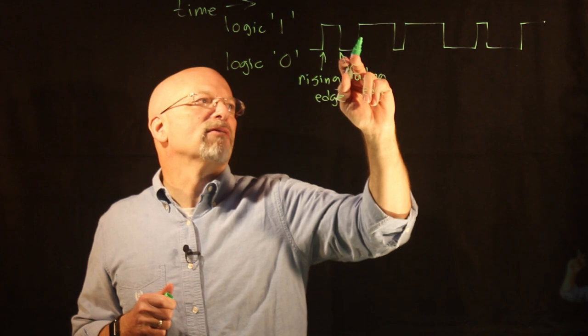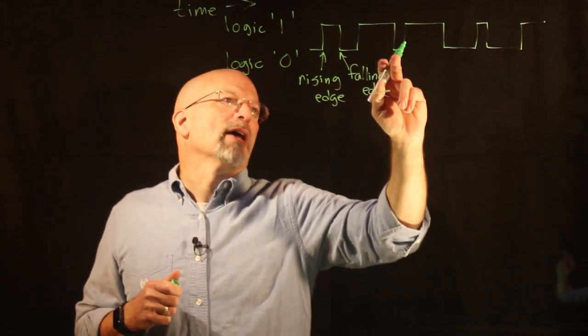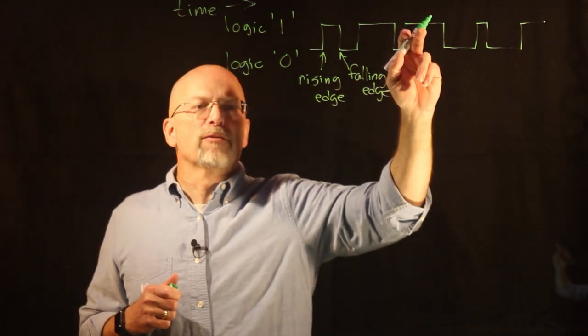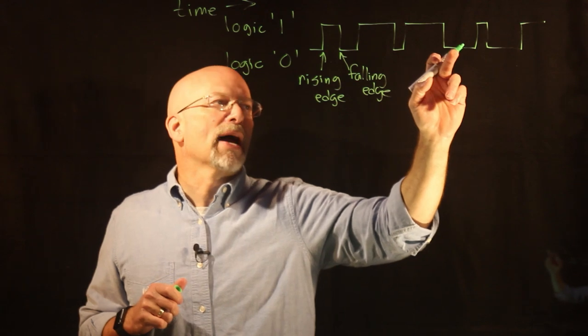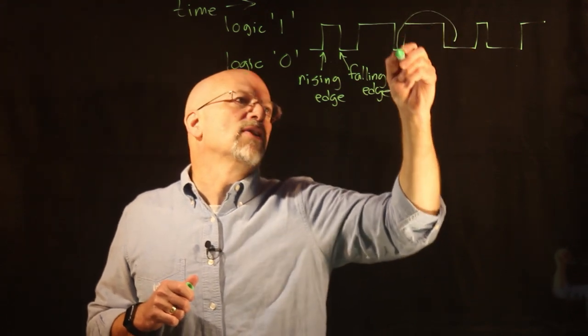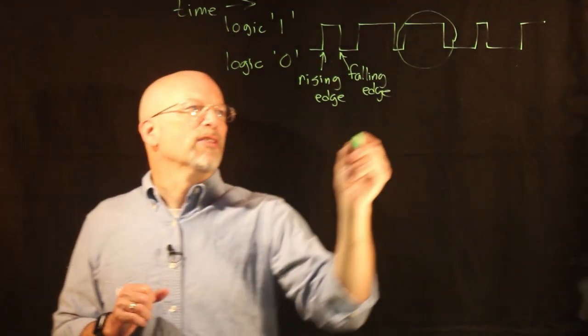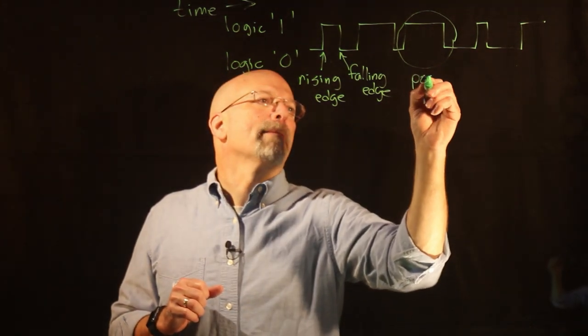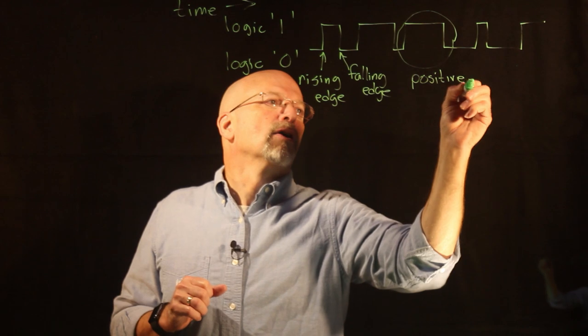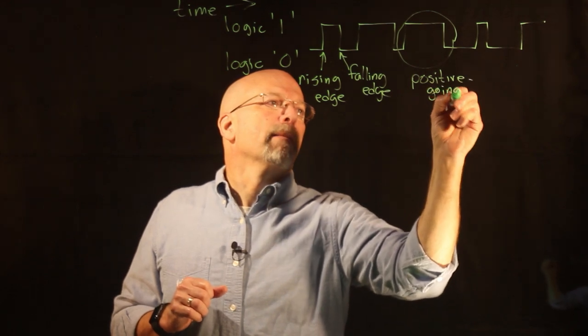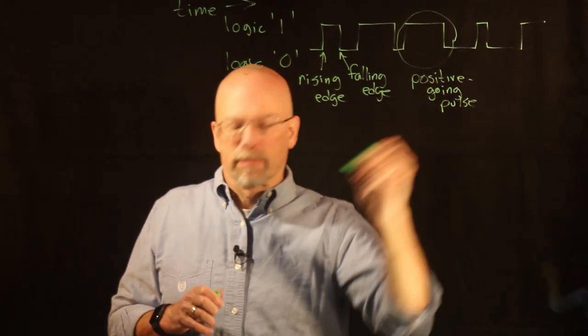Now you put two edges together and what you've got is a pulse. Right here we have a logic zero going to a logic one for just a moment of time and then going back to a logic zero. This guy is referred to as a pulse, specifically though it is referred to as a positive going pulse.